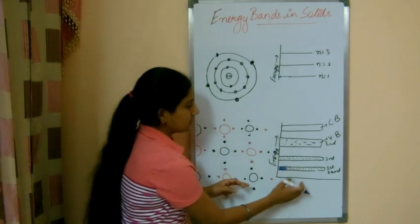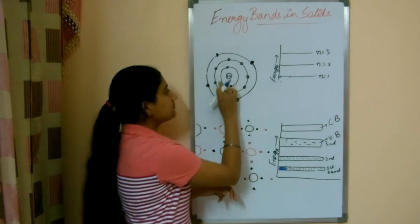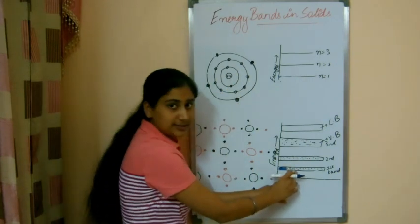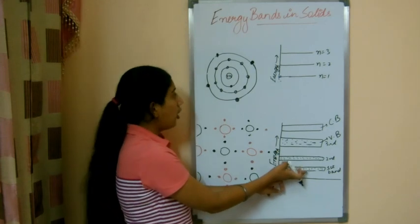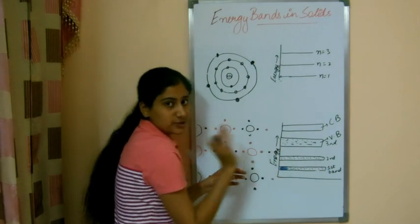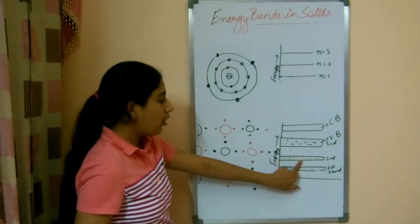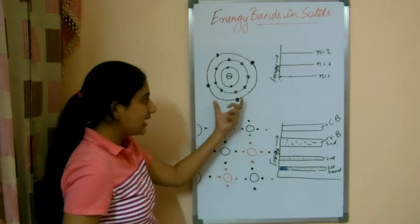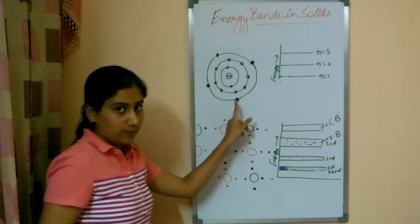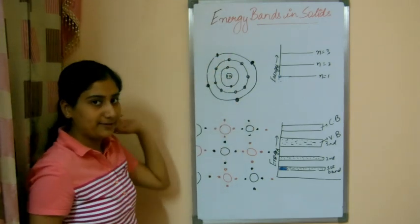This cluster of energy levels forms a band. This representation shows the energy levels of electrons present in the first orbit of atoms in a solid. Similarly, this represents electrons in the second orbital, and so on for third, fourth, fifth orbits.